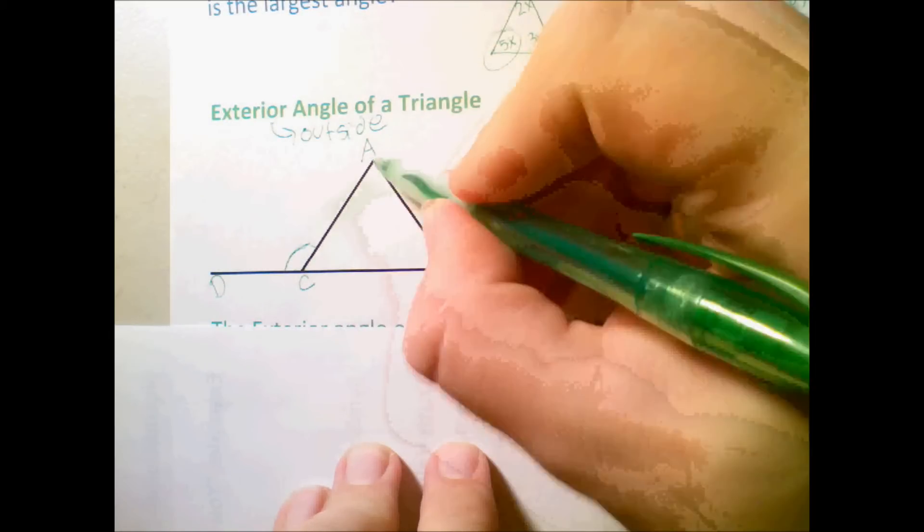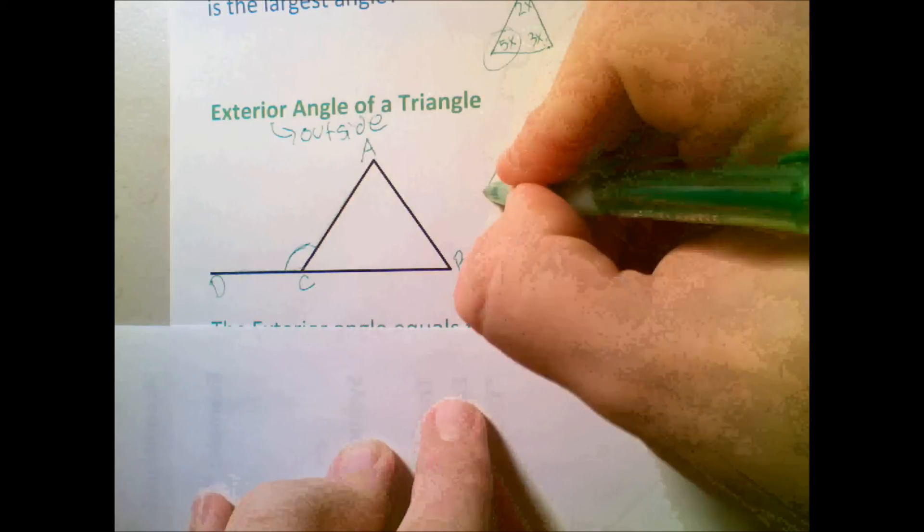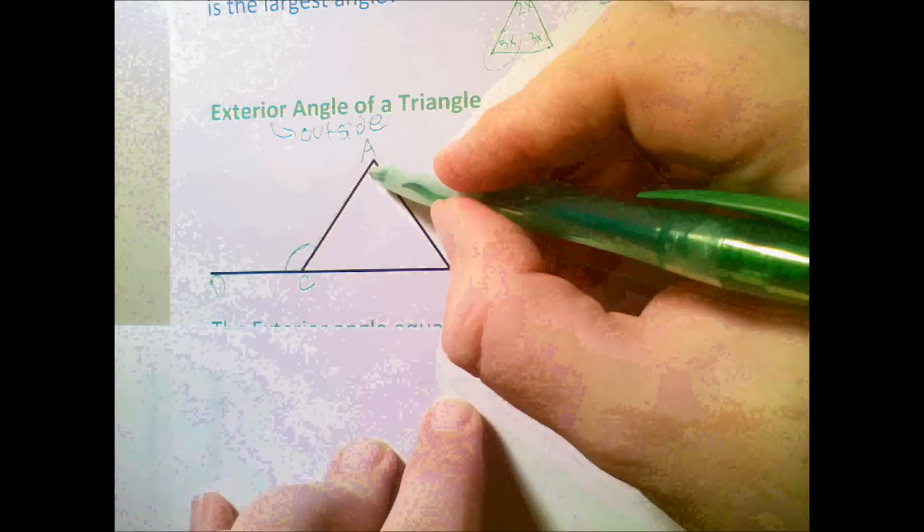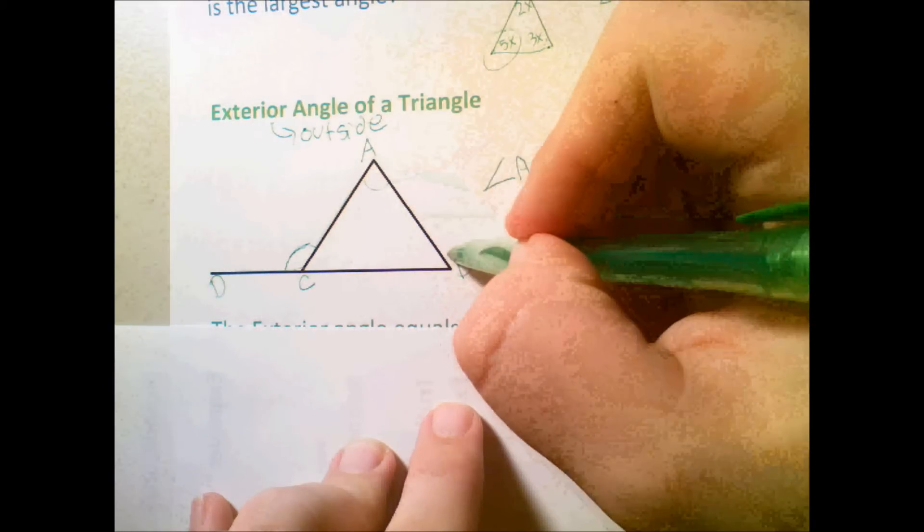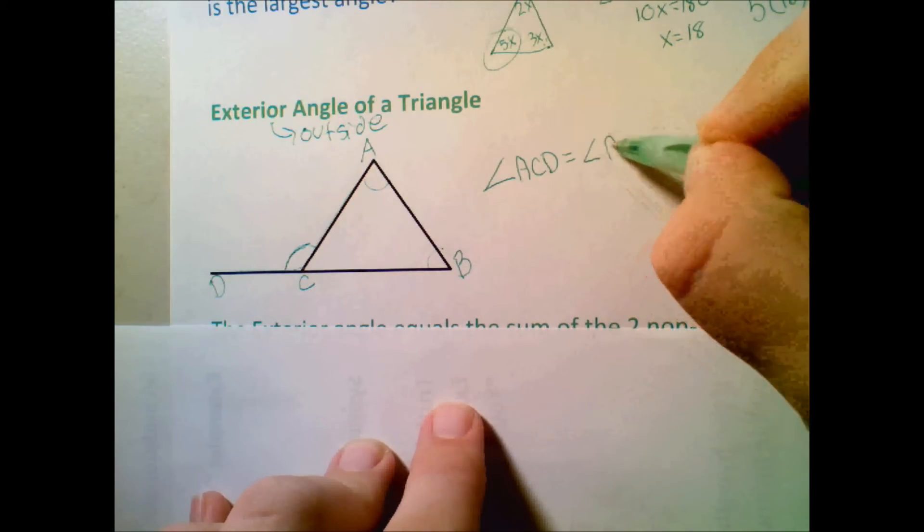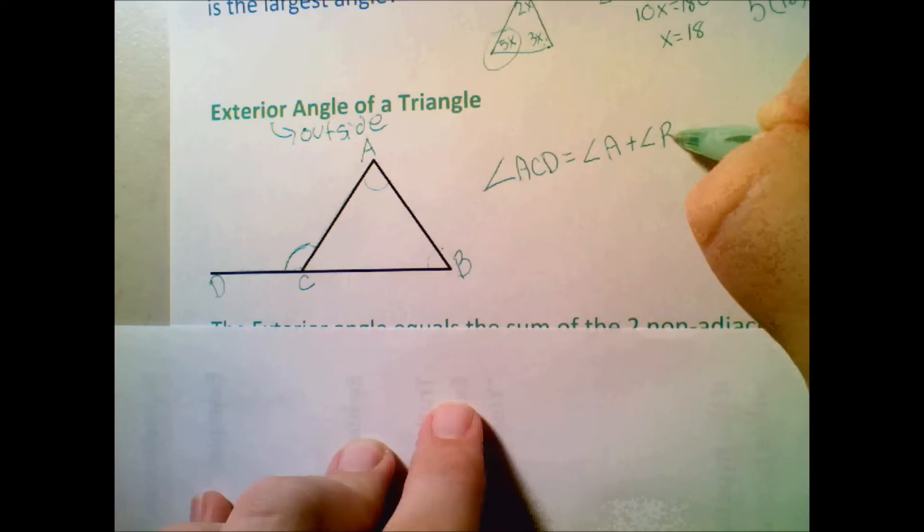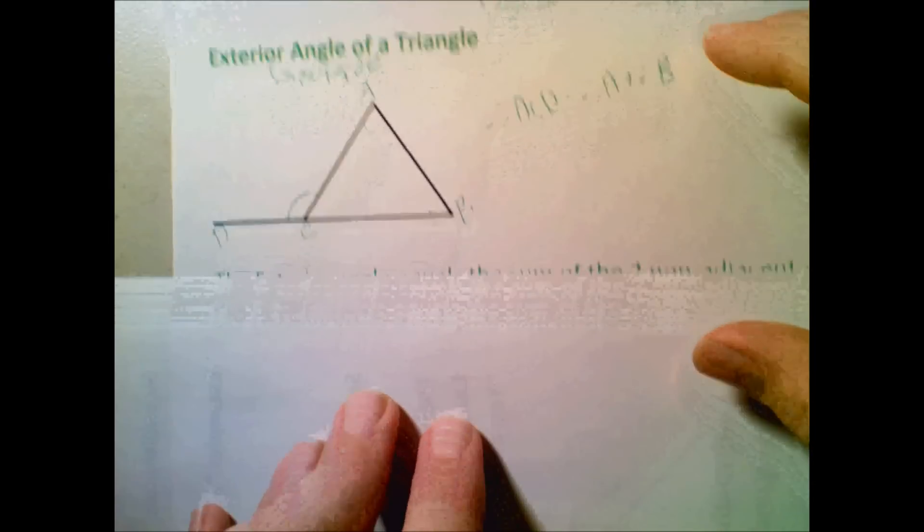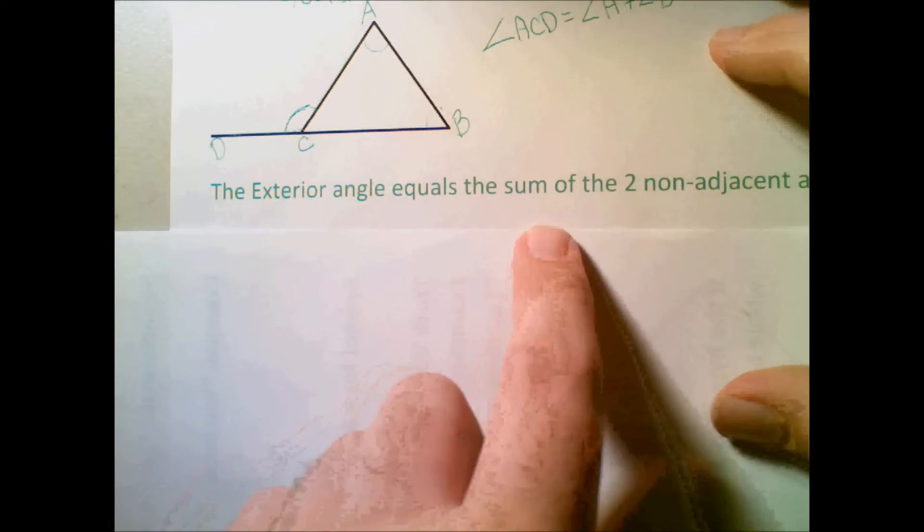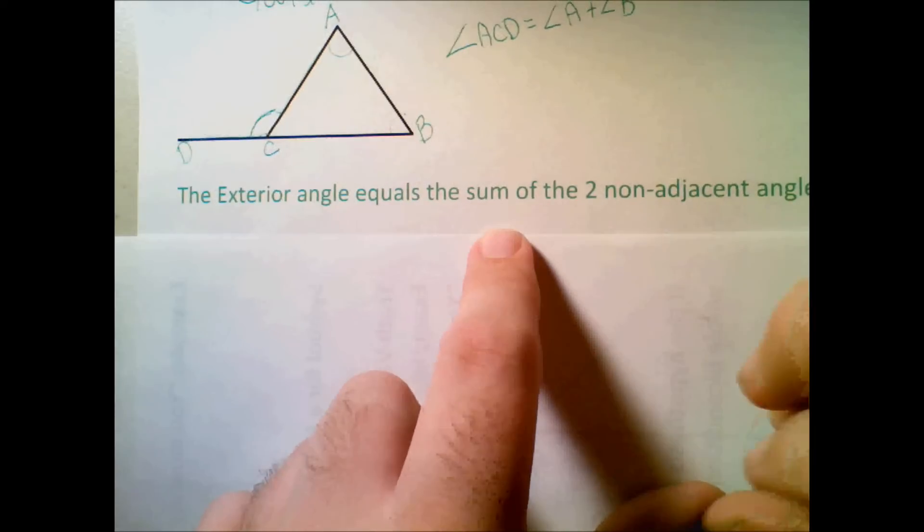So basically, in order to figure out what this exterior angle is, this is angle ACD. So angle ACD is going to be equal to the measure of angle A plus the measure of angle B. So whatever angle A is plus angle B. Let's take a look. Basically, the exterior angle is going to be equal to the sum of the two non-adjacent angles.